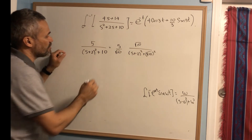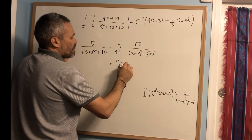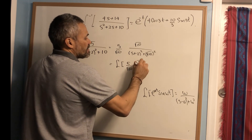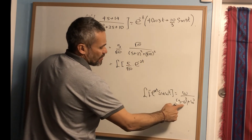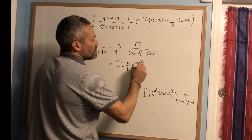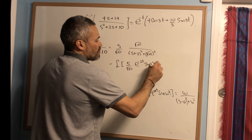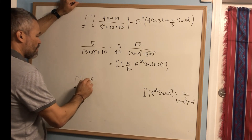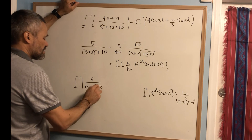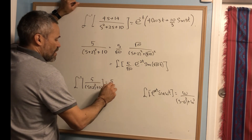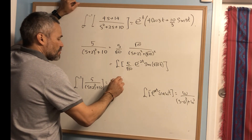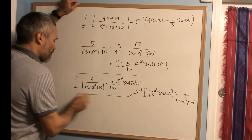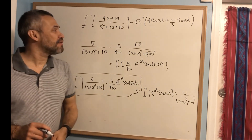We need √10 in the numerator to match the formula, so we write this as (5/√10) times √10 over (s+2)(s²+10). Comparing s+2 with s-a, we get a = -2. Therefore the inverse Laplace transform of 5/((s+2)(s²+10)) is (5/√10) e^(-2t) sin(√10 · t).